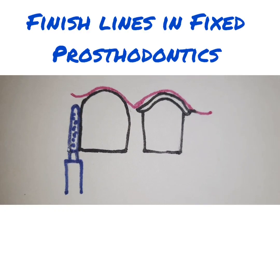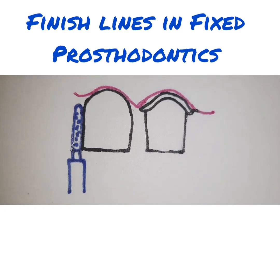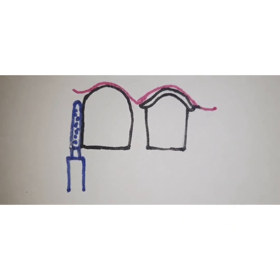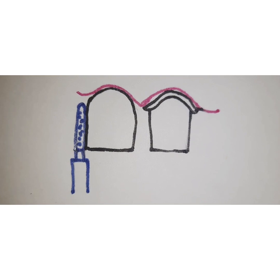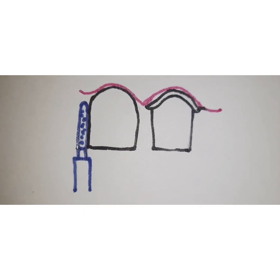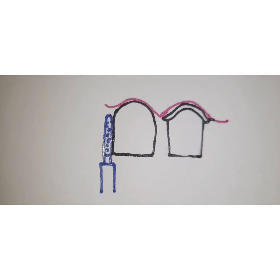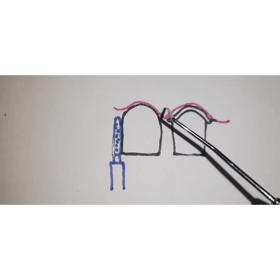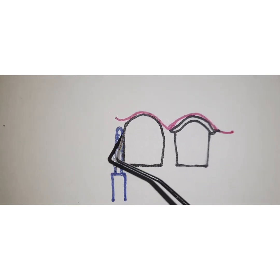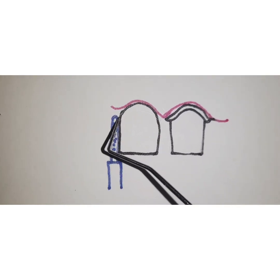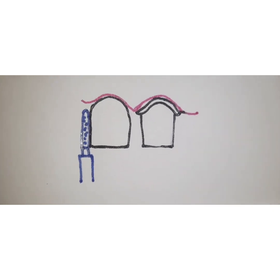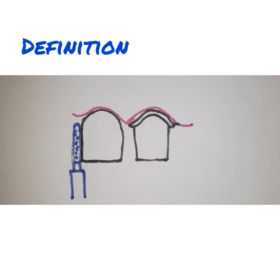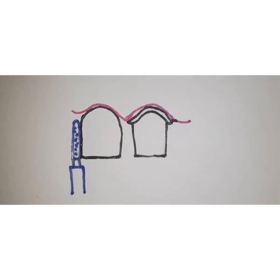Hello friends, I am Dr. Vijay Prakash and today I will be talking to you about finish line in fixed prosthodontics. Finish line is basically the gingival termination of the tooth preparation. Whenever we are doing tooth preparation, the place where we are going to stop towards the gingival - where we are going to end a preparation - that is called the finish line. By definition, finish line is the terminal portion of the prepared tooth or the peripheral extension of the tooth preparation.